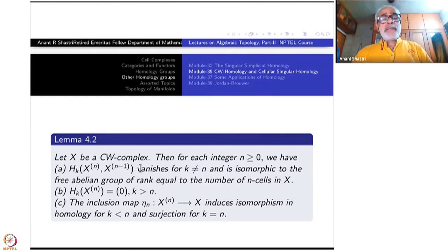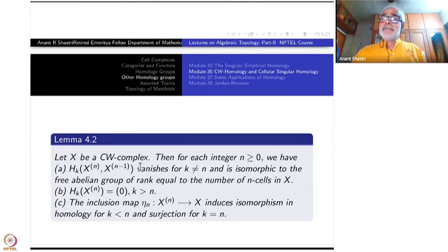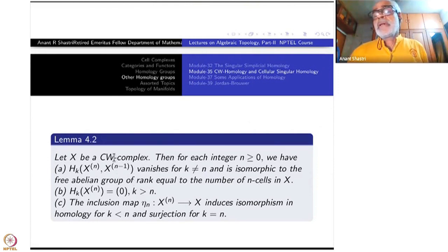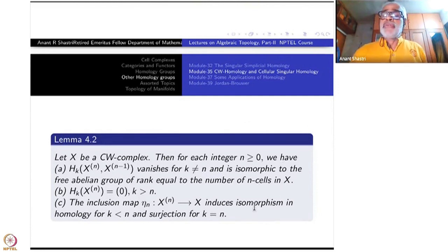Let us stop here. Next time we will use this to give a complete picture of the homology of a CW complex, and out of that we will cook up another chain complex for X itself — being a CW complex — whose homology is isomorphic to the homology of X. That is the beauty of this construction.